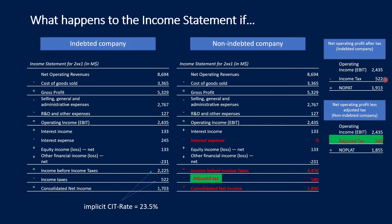The better version is the so-called NOPLAT — Net Operating Profit Less Adjusted Tax. It also starts with the operating income but deducts the adjusted tax. We can do this for both the indebted and non-indebted company. For the indebted company, EBIT is still the same, and we adjust the tax and deduct it, so we get the NOPLAT — net operating profit less adjusted tax.